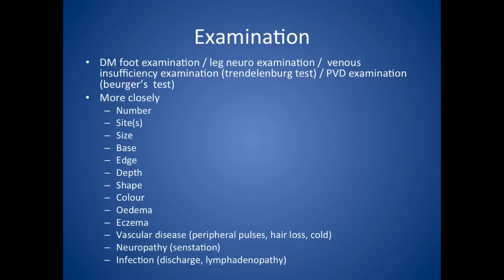Now looking more closely at examination of the ulcer itself: you want to see how many ulcers there are, look at the site, how big it is, what the base is like, whether the edge is even or uneven, and if it's deep or shallow — sometimes you can even see down to the bone. Look at the shape, the colour, and look for corresponding oedema. There might be eczema, poor peripheral pulses, shiny legs with no hair that are very cold. Test sensation for neuropathies, and look for signs of infection like discharge or lymphadenopathy.